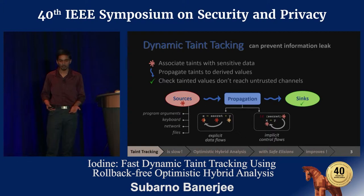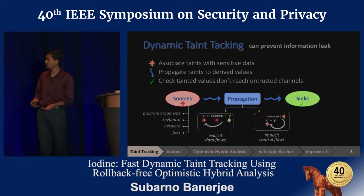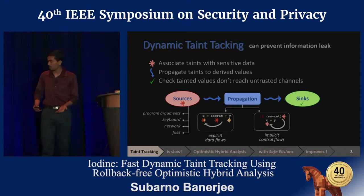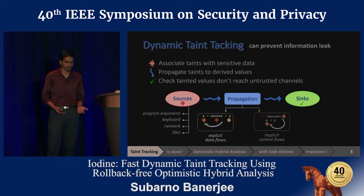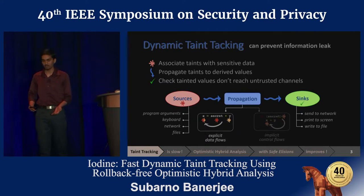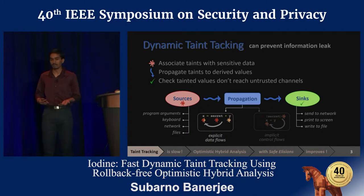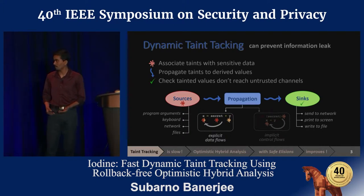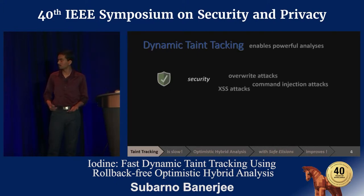With implicit propagation, the taint also flows to the result of all operations inside the condition. However, implicit propagations are rarely used in practice because they lead to over-tainting, so we only focus on explicit flows. Finally, sinks are program locations where we check the taint state — for example, data being sent over the network should not contain certain types of taints. By adapting the source, sink, and propagation policies, taint tracking has been useful in several domains.